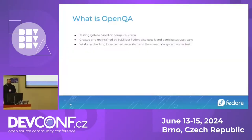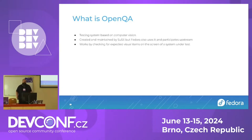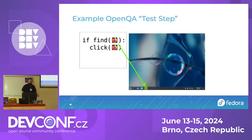Going into the stuff in the title: OpenQA is a testing system that works primarily on computer vision. It was originally created by the folks at SUSE, but Fedora uses it heavily and we participate upstream as well. The core thing of OpenQA is that it works off of computer vision, so where most other test systems are text-based, this ends up becoming quite a bit more visual.